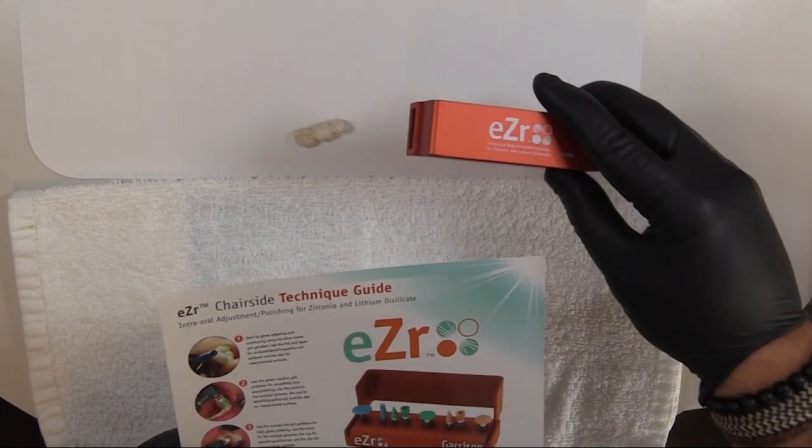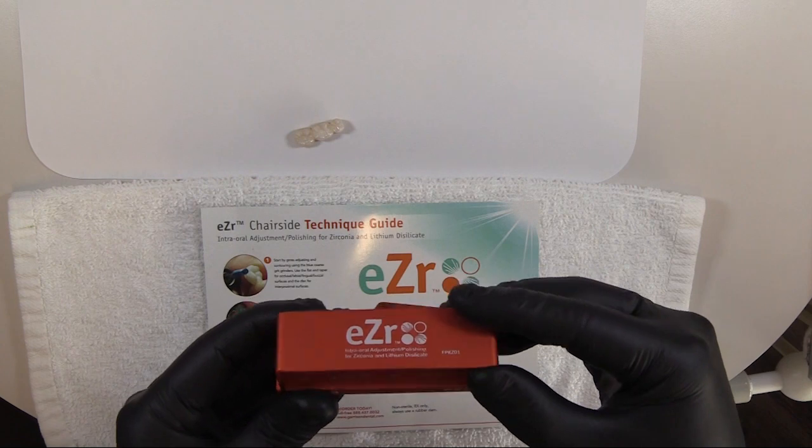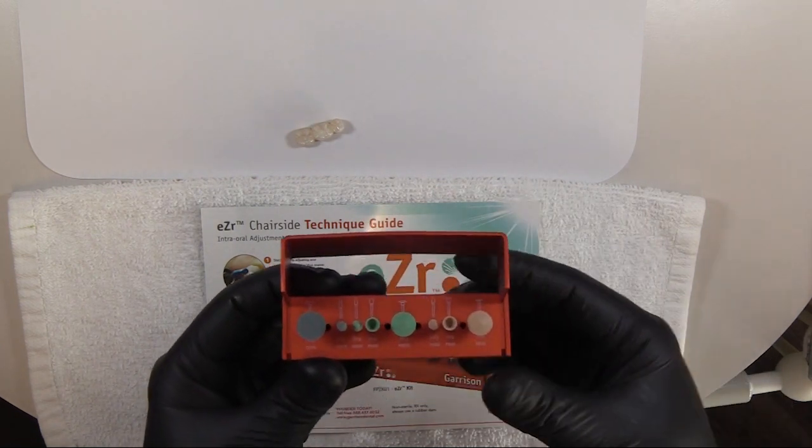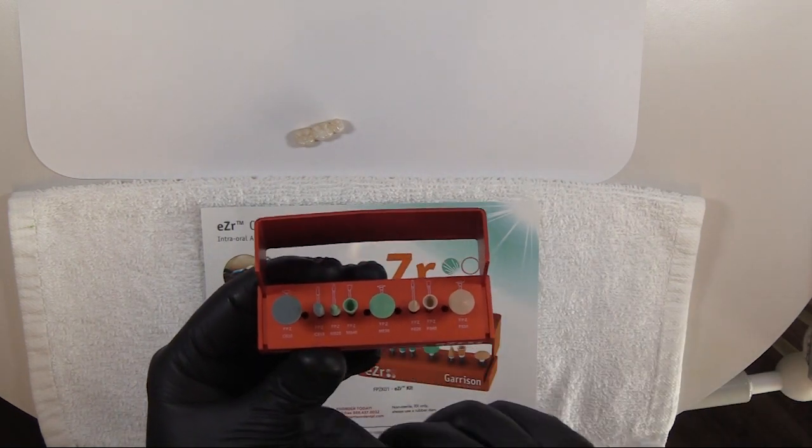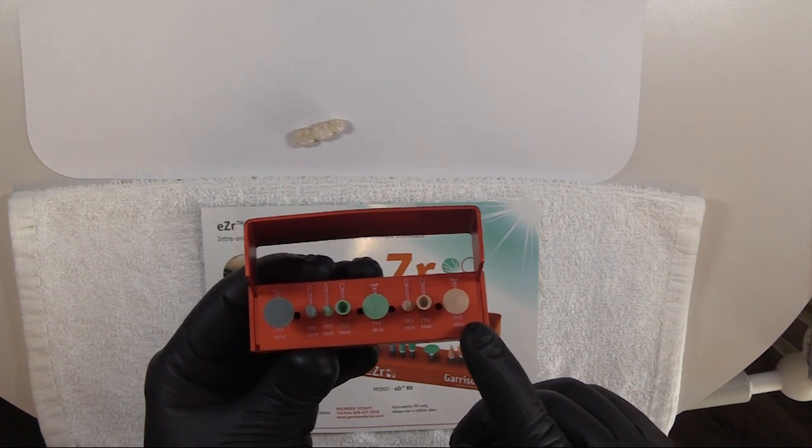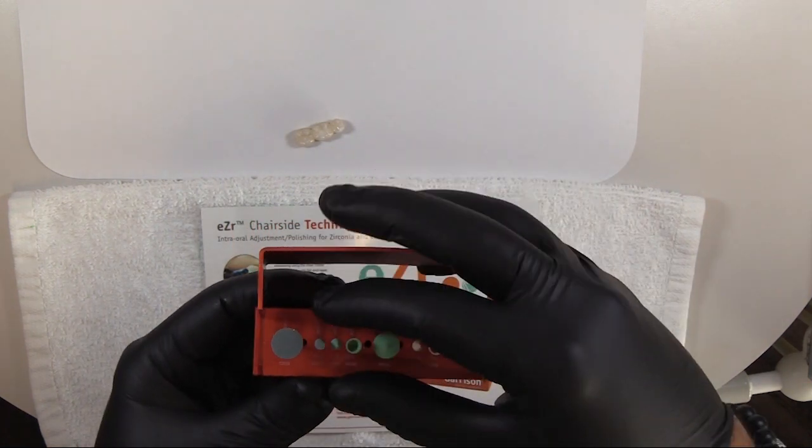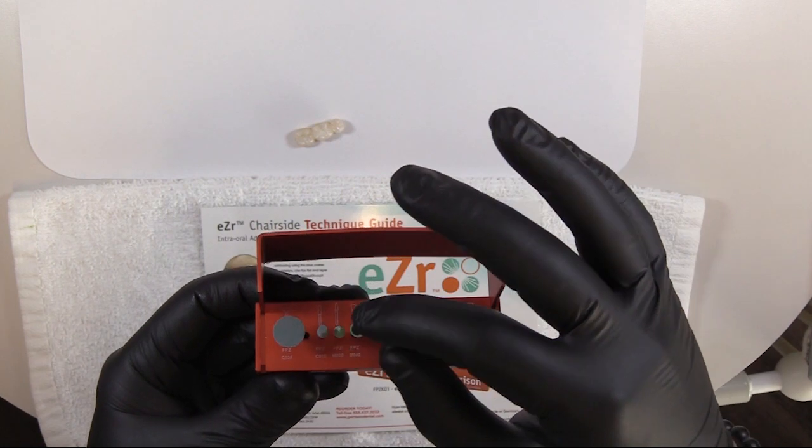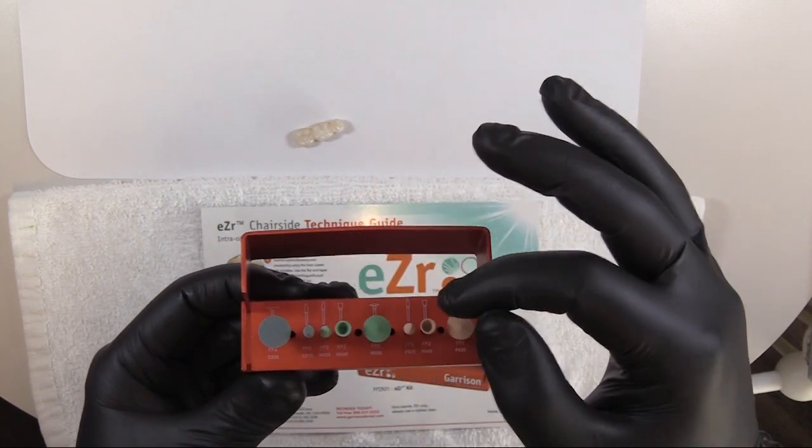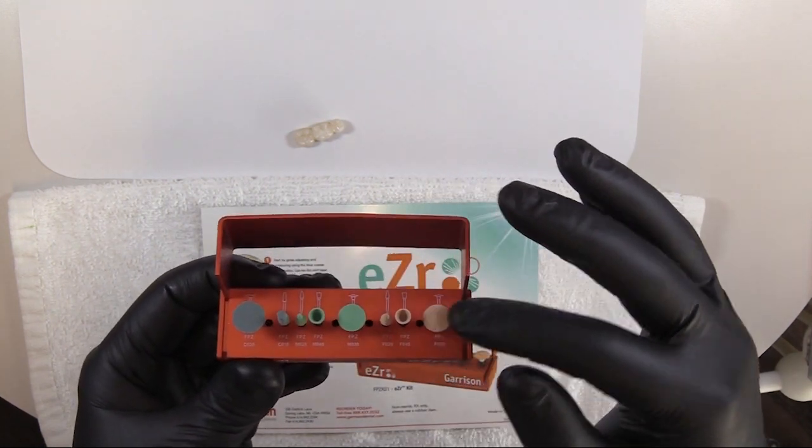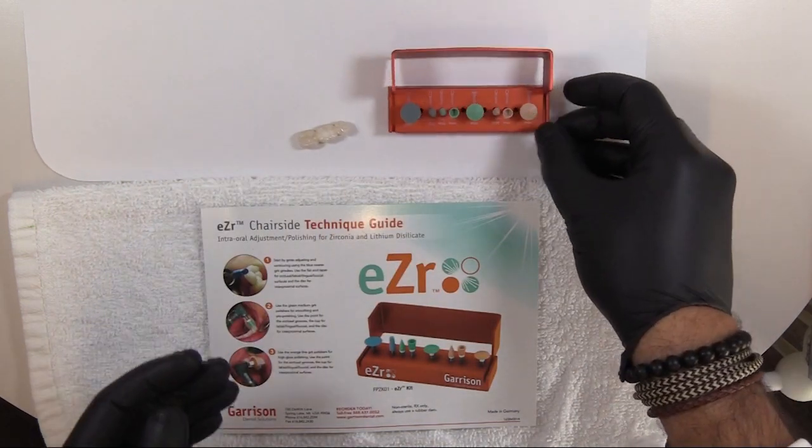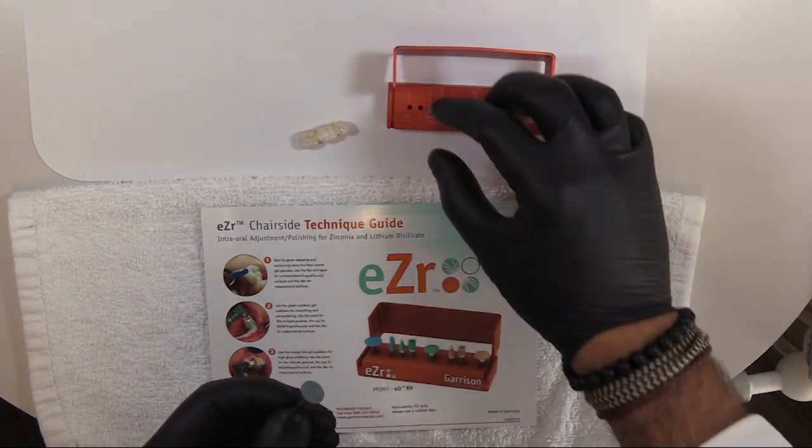This is the EZR zirconia and lithium disilicate polishing kit. As you see when you initially uncover it, there are three stages of polishing: the blue rubber coarse grit grinders, the green medium grit polishers, and the orange fine grit. Let's briefly go through the reasoning or rationale of each one.